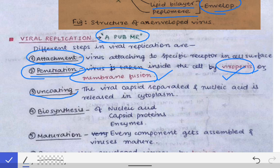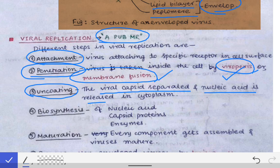The next step is uncoating. Now that the nucleocapsid has entered the host cell cytoplasm, the nucleic acid must come out. This requires removal of the capsid; that removal is called uncoating. The viral capsid is separated and the nucleic acid is released into the cytoplasm.